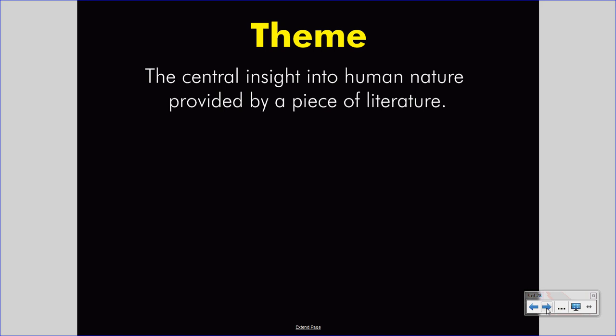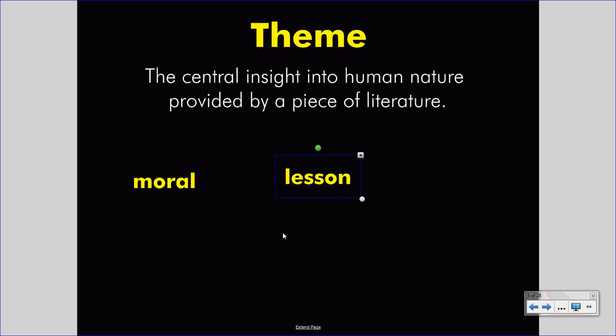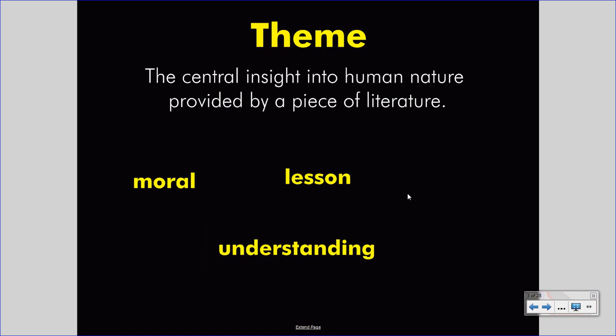That's a pretty sophisticated definition, and it may throw you for a moment. So let's try to break it down into simpler, even though not as specific, terms. The theme is the message that the author wishes to give you. It could be a moral. It could be a lesson. Somehow the author wants you to understand something, and is giving you this message through the literature. The understanding is about us — about people and our own lives, and what it's like to be a human being.